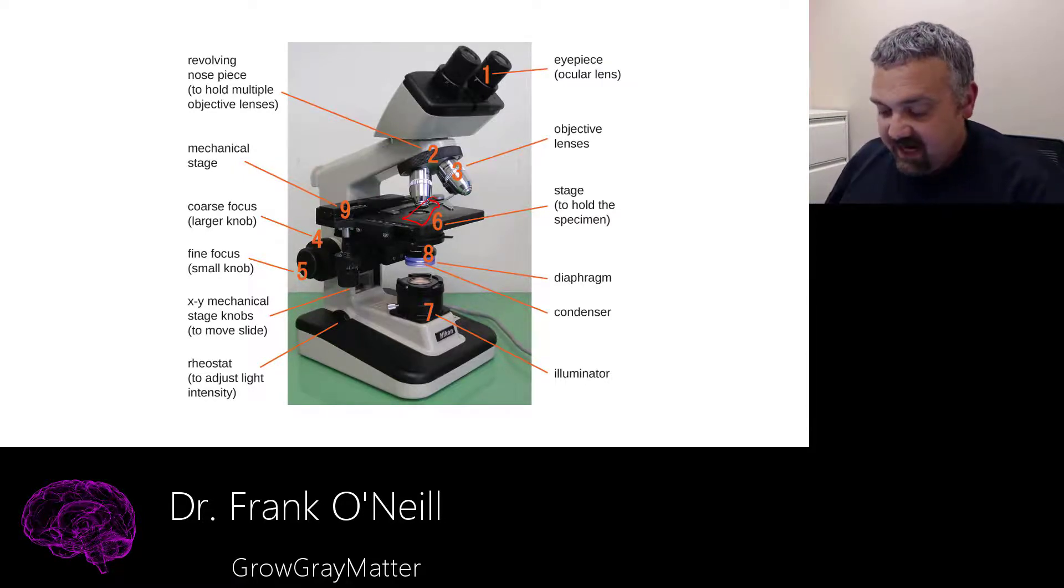Number seven is the illuminator. That's your actual light source. In this instance, being visible light, since it's a light microscope.